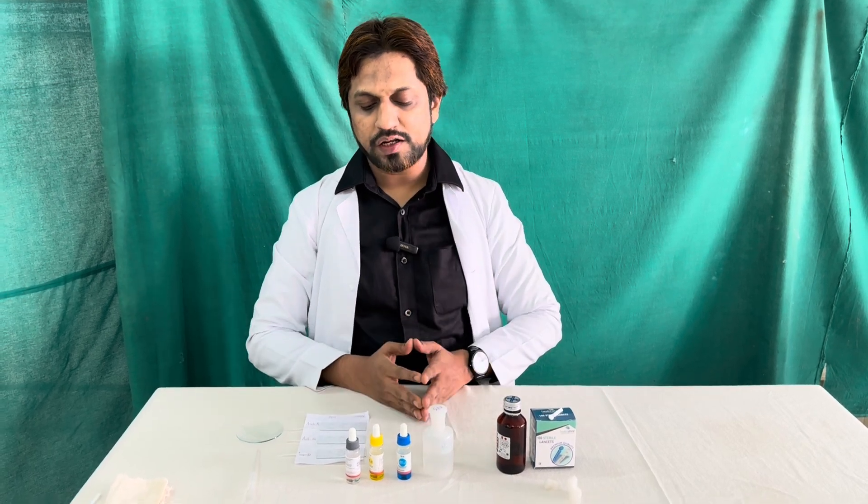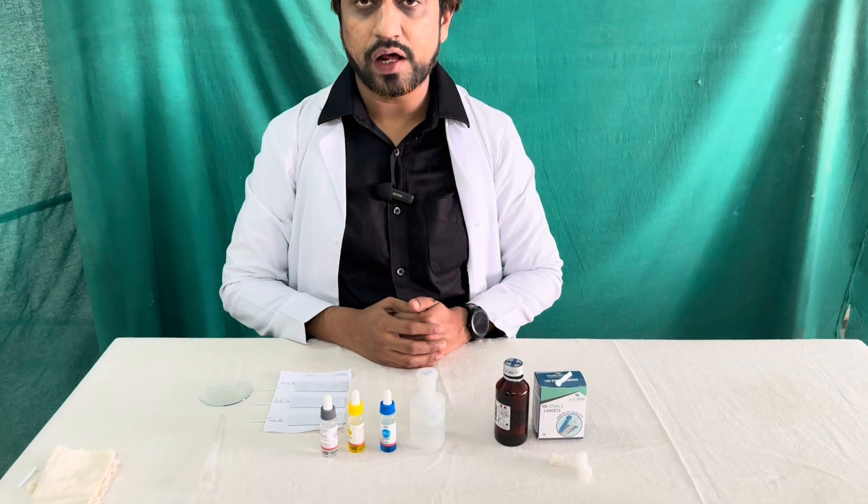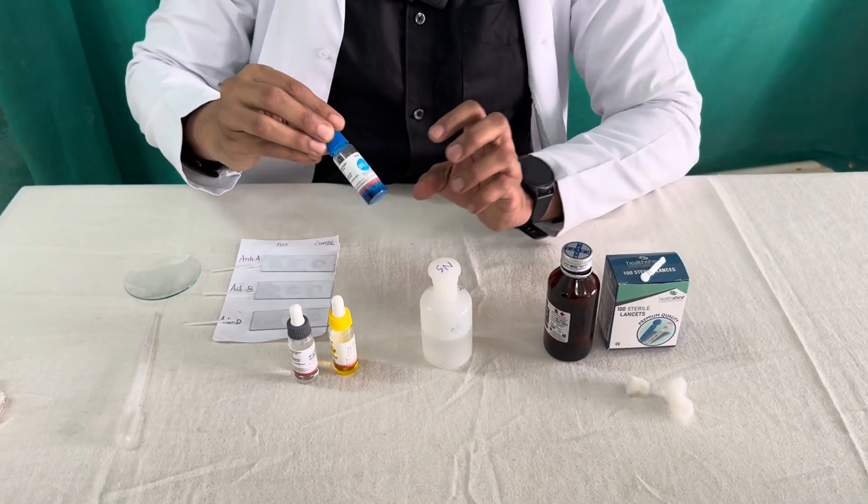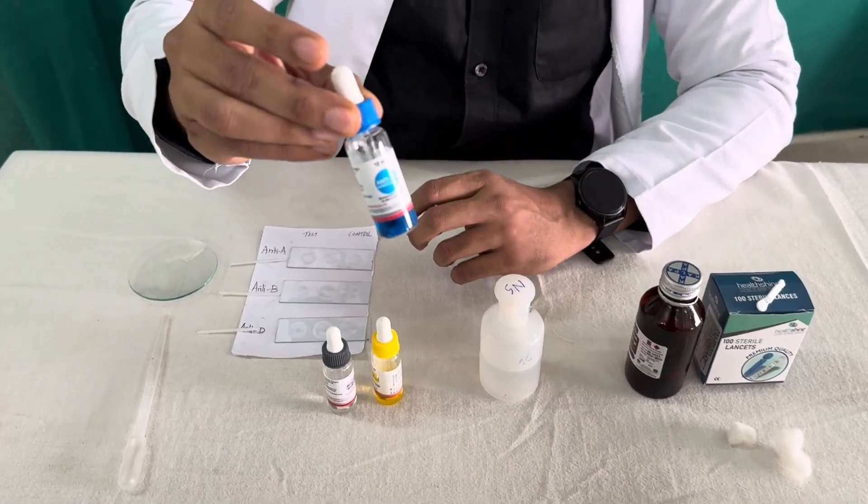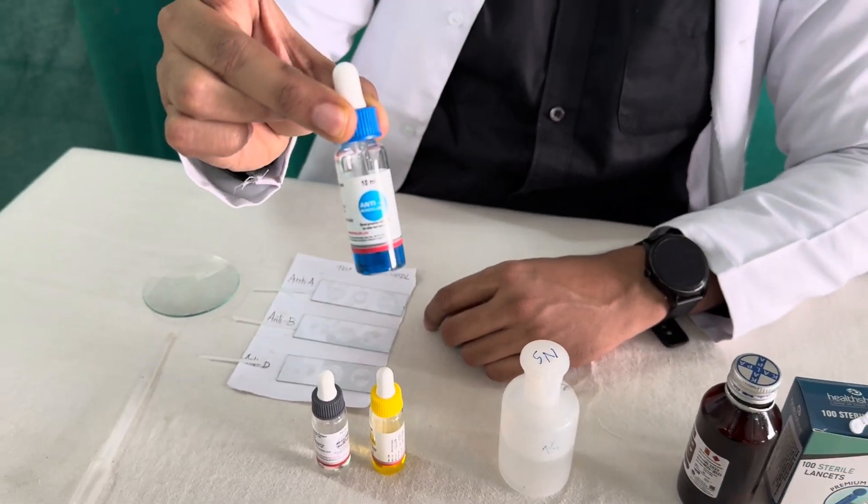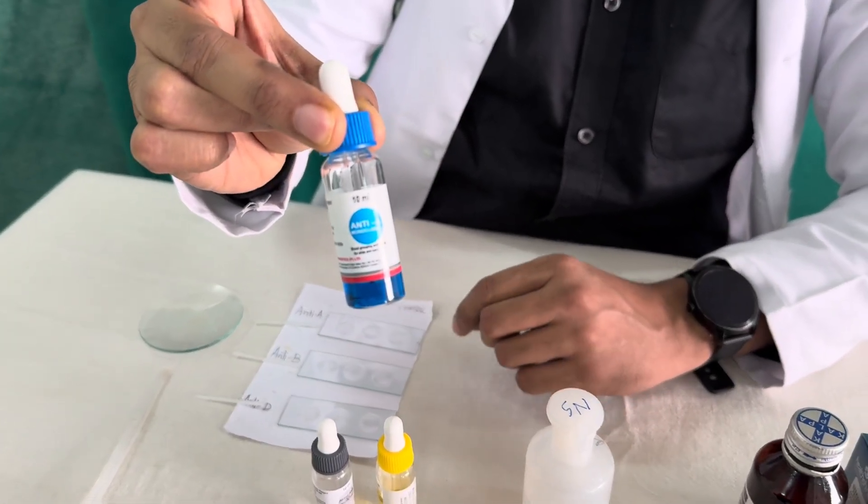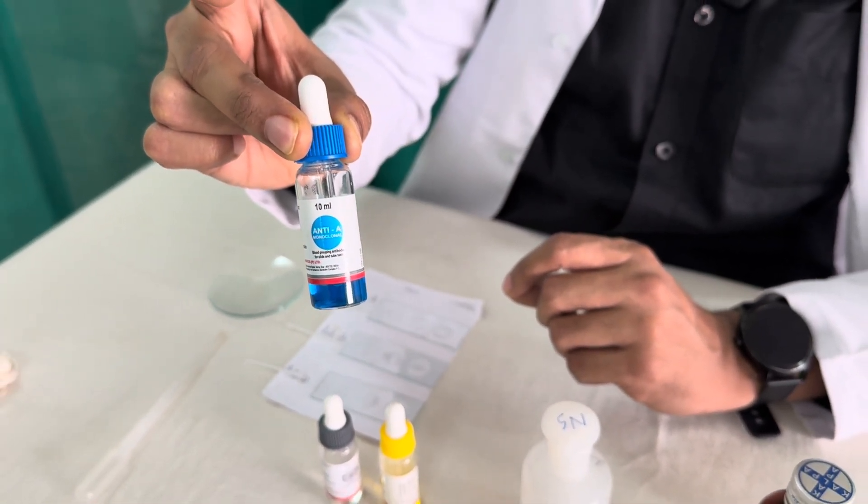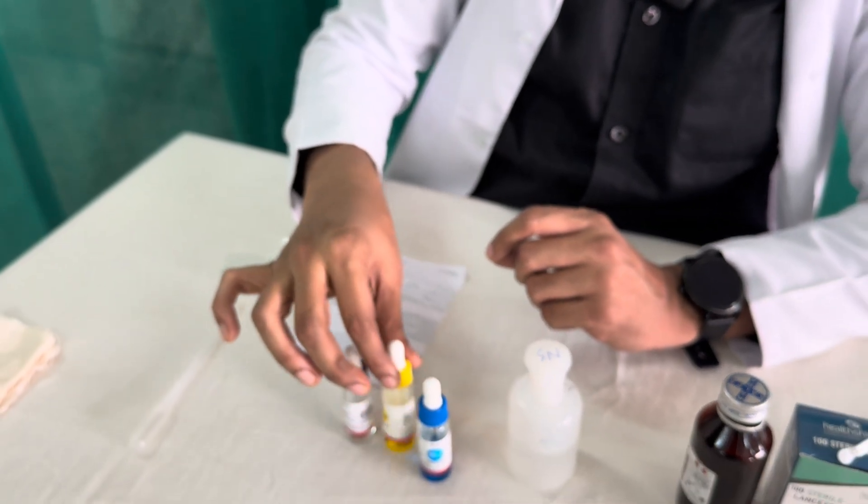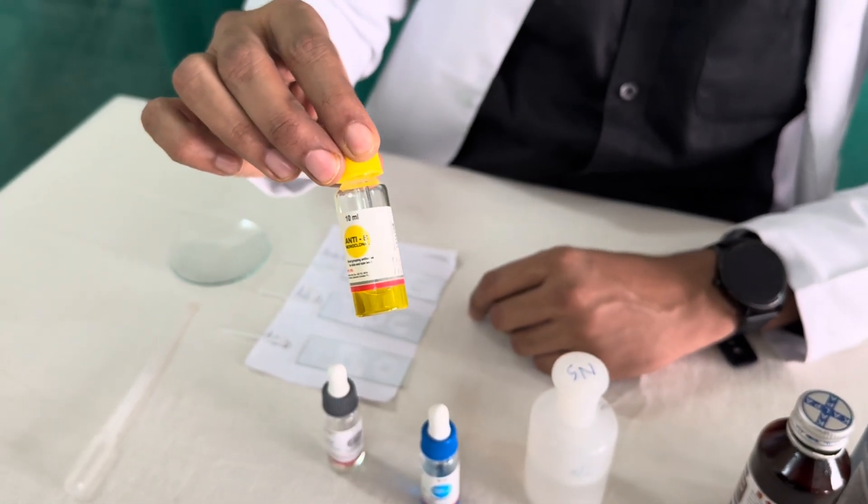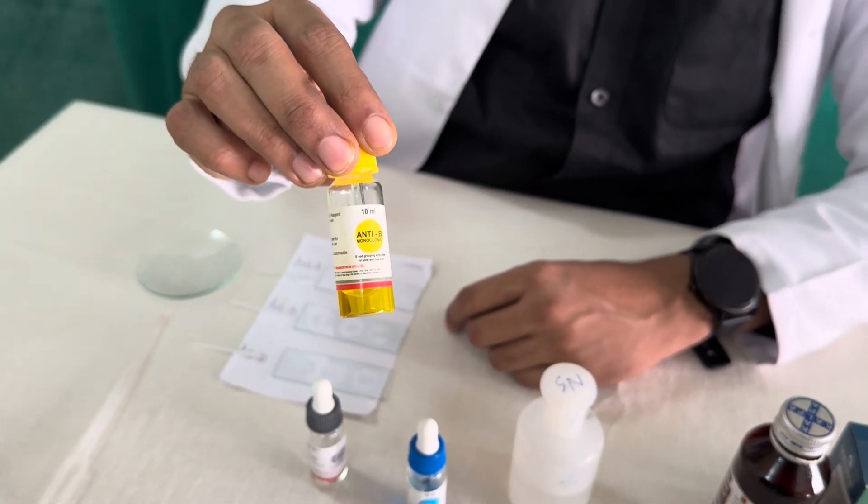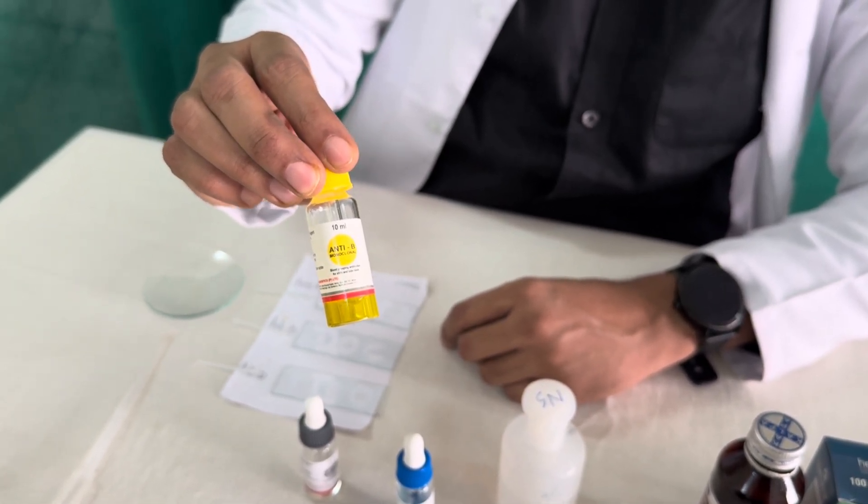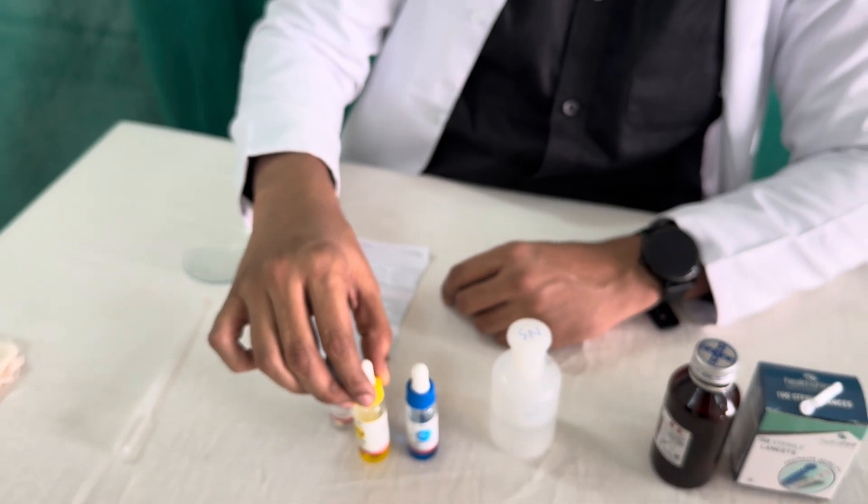For determining the blood group, what are the essential things we require, the instruments or apparatus. This main is anti-sera. This blue color liquid is the anti-sera A or anti-A. It contains antibodies against the A antigen. And this yellow color fluid is the anti-B, the anti-sera B.